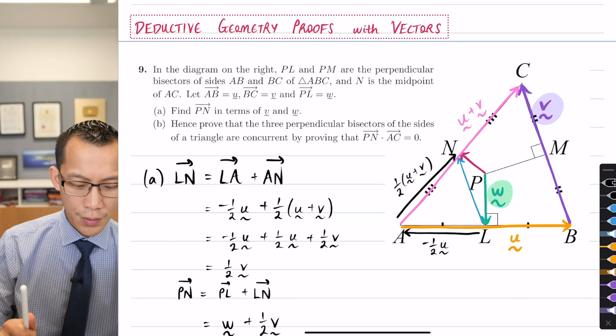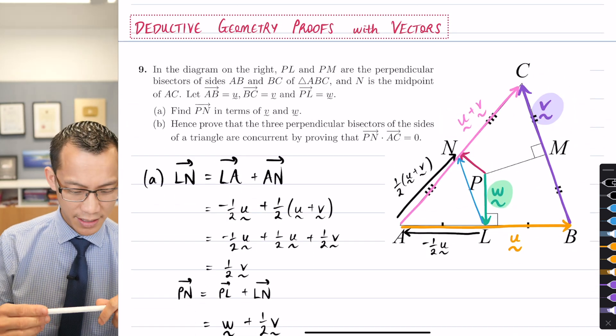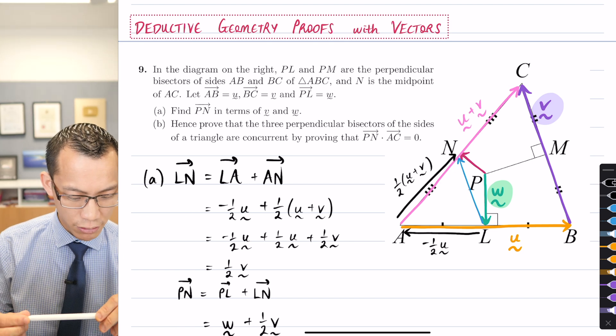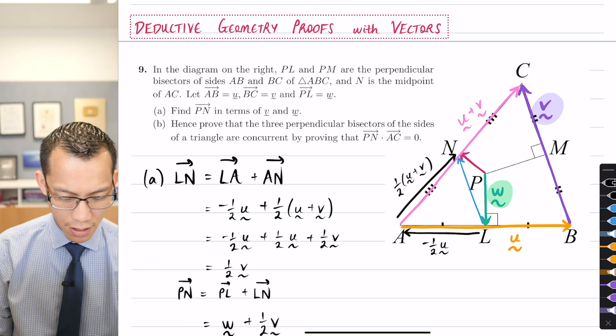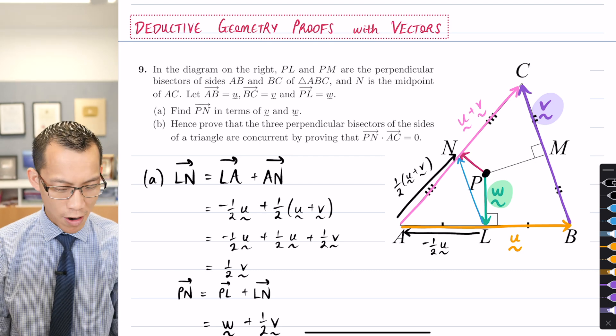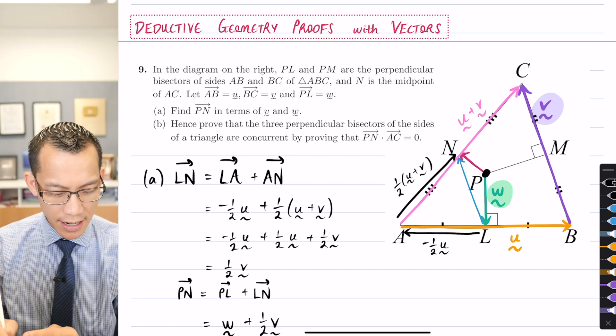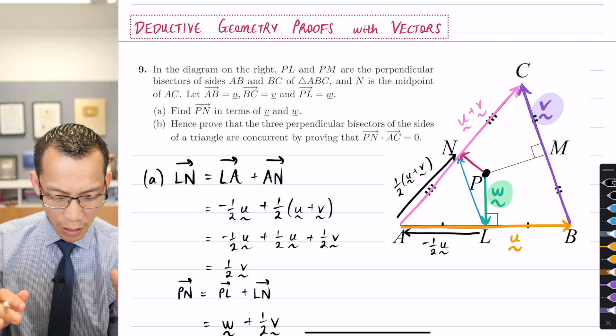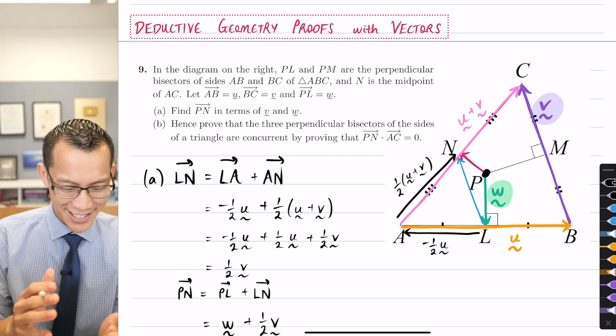It says, prove the three perpendicular bisectors of the sides of a triangle are concurrent. So that means that all of these lines, they all meet at the center there by proving that PN·AC is zero. Now hold up for a second. Let's just understand what's being asked here.